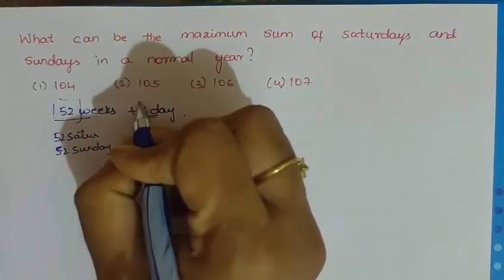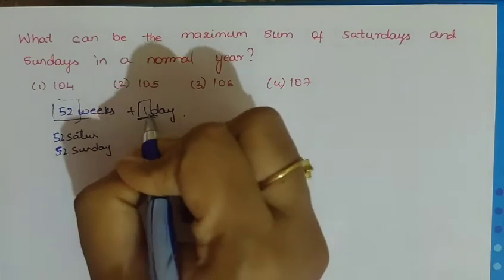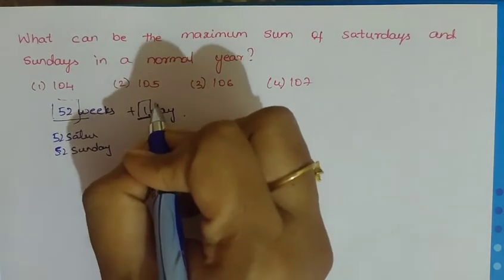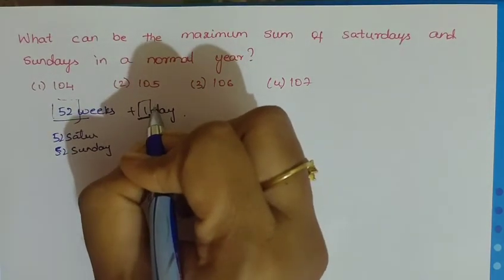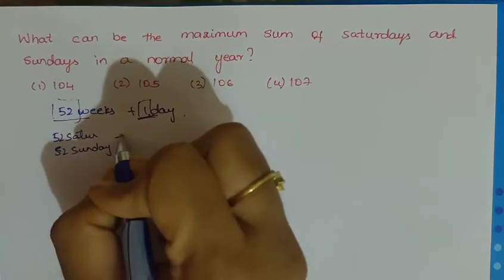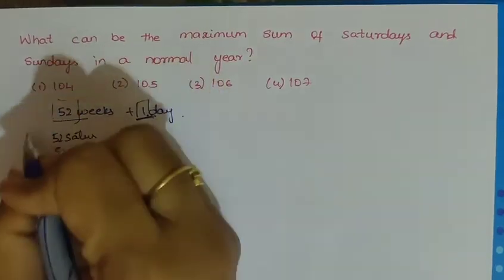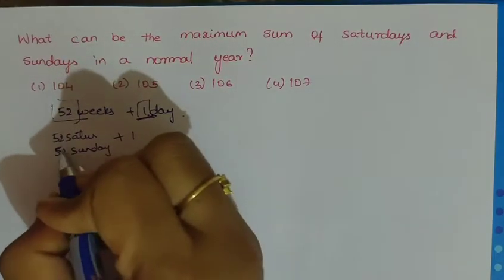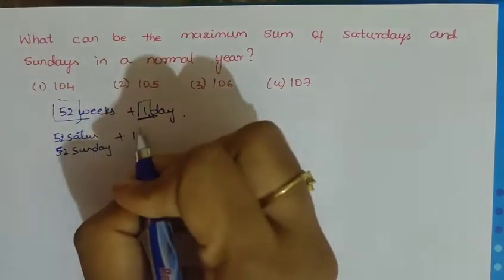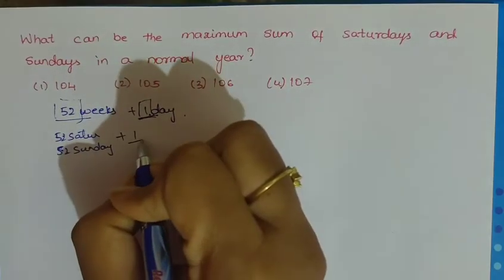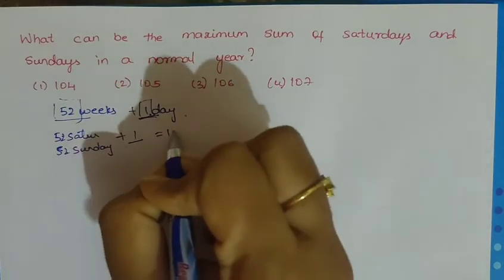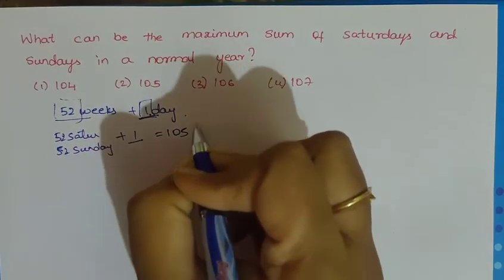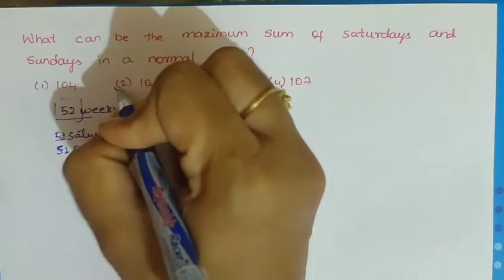This one odd day is either Saturday or Sunday, so we have to consider it. Saturdays plus Sundays: 52 plus 52 is 104, plus 1 gives a total of 105 days of Saturdays and Sundays maximum.